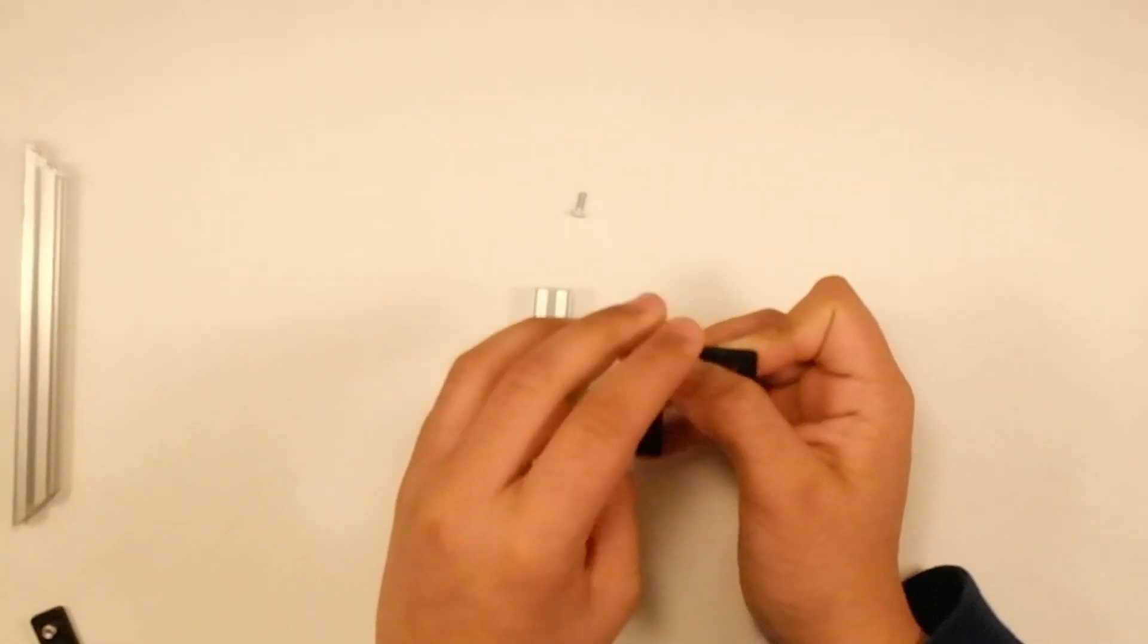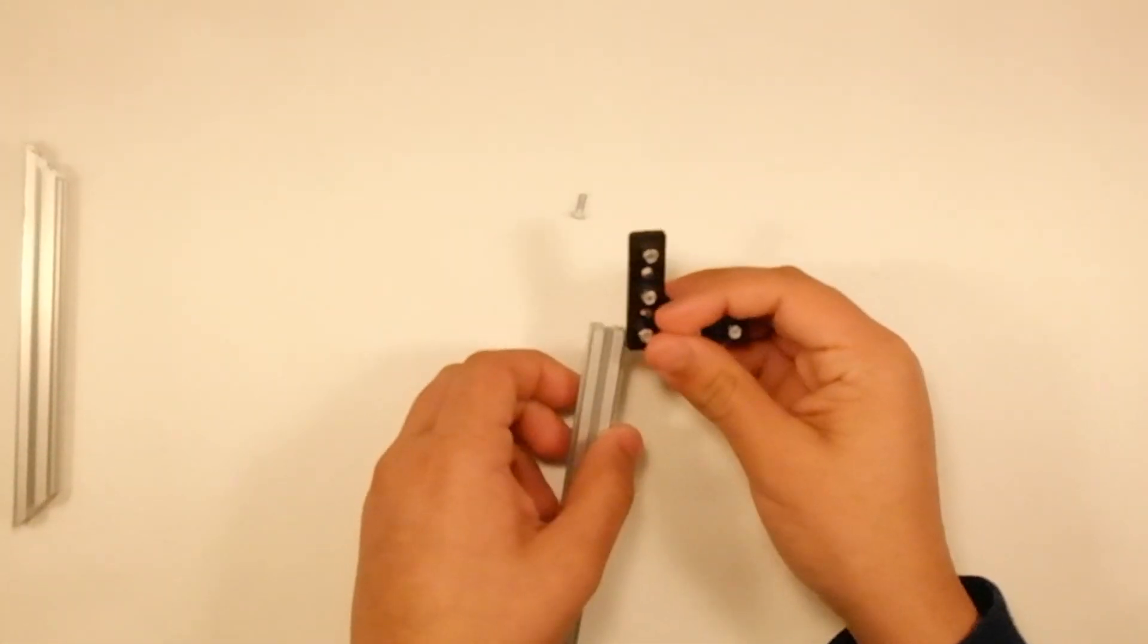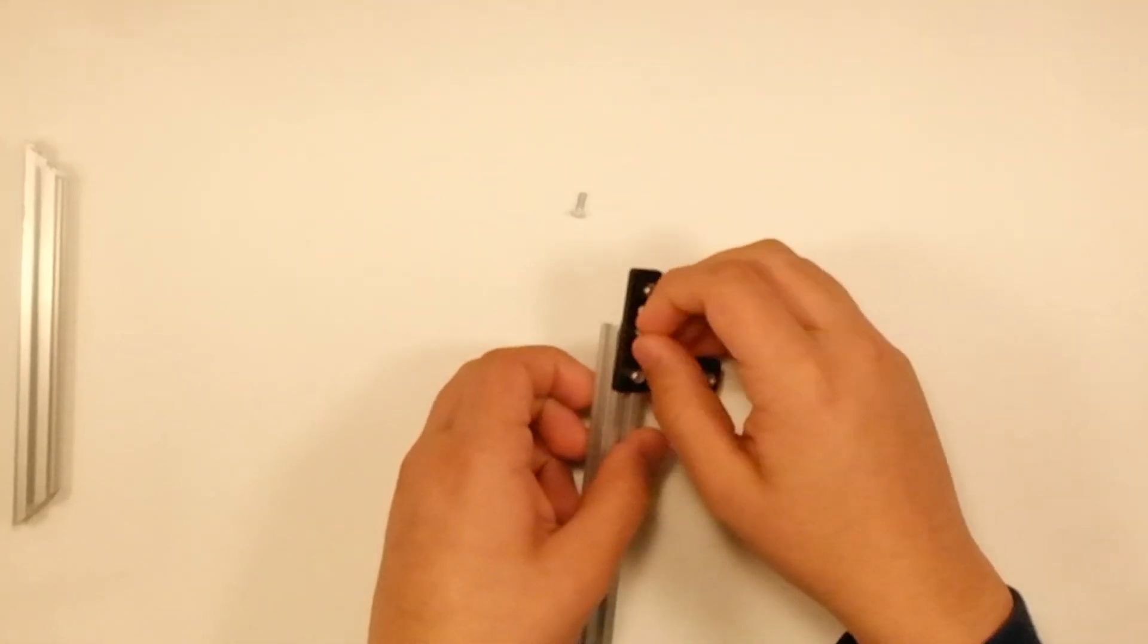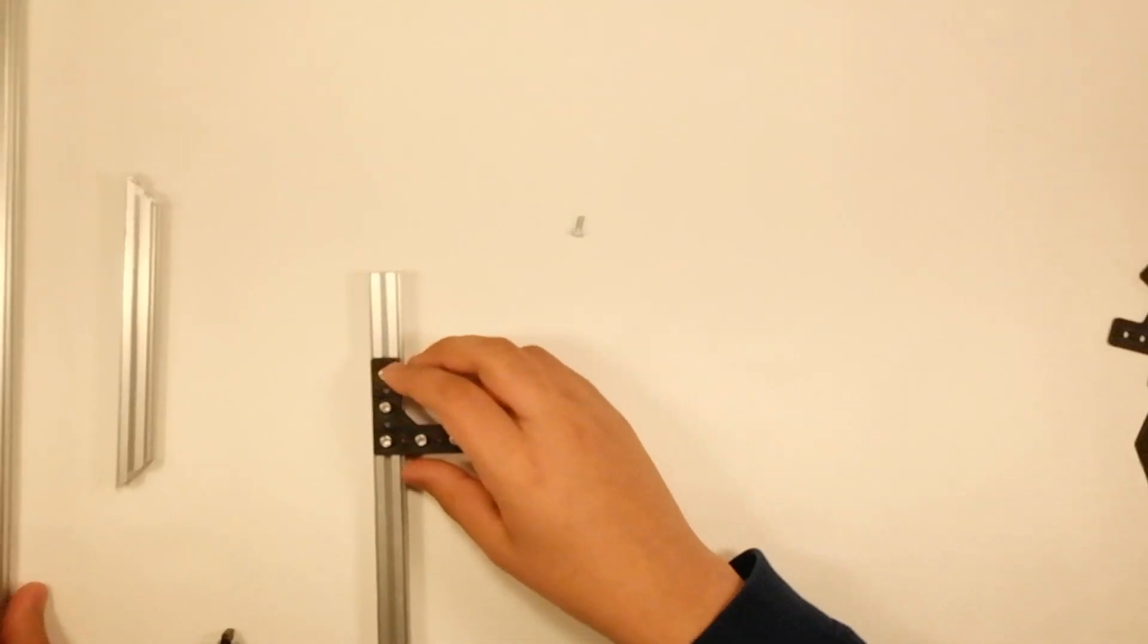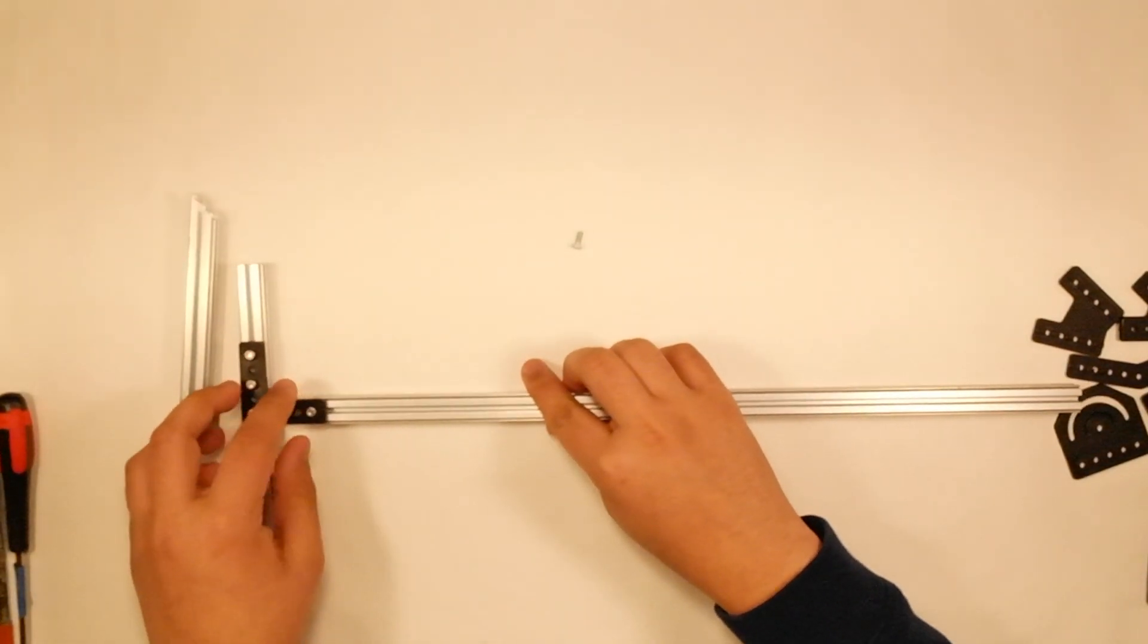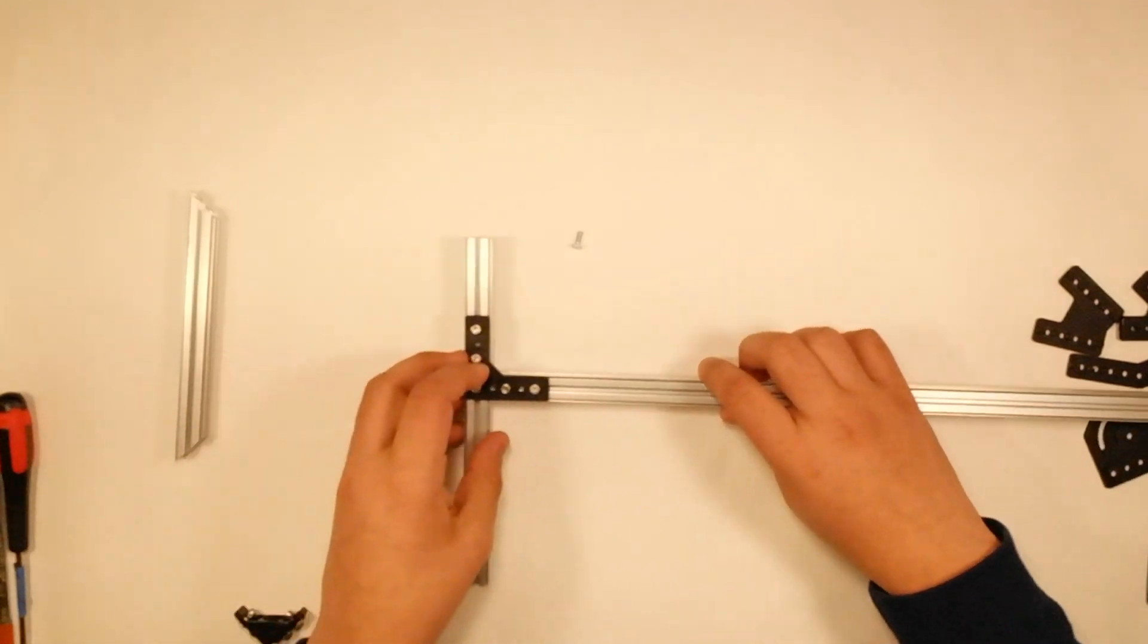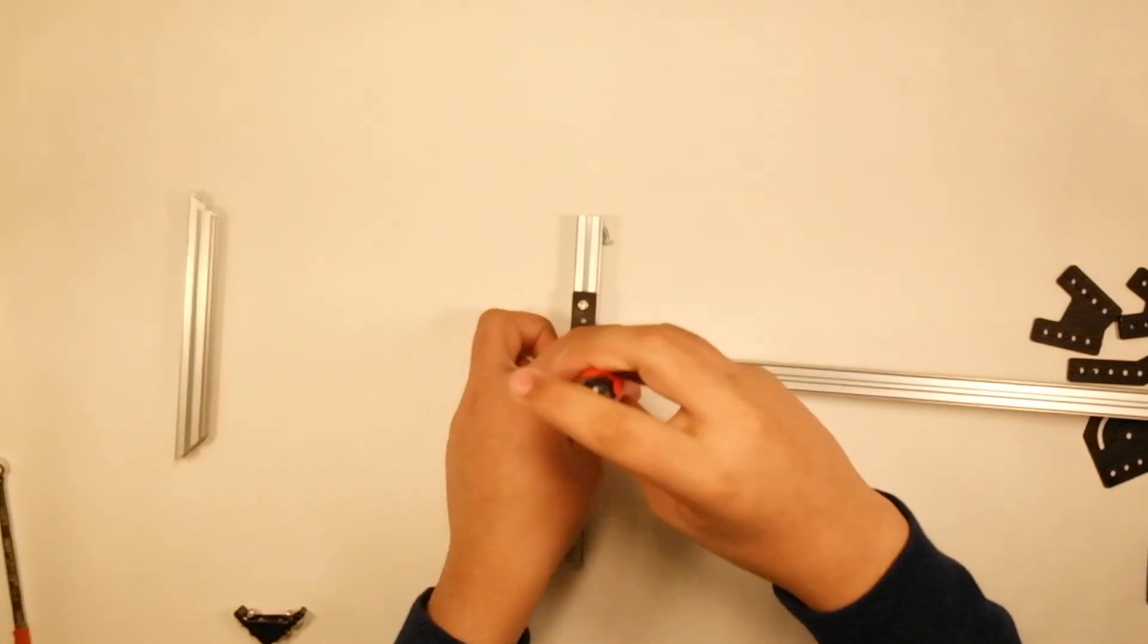And I've already done that for one of these 90 degree brackets right here. In order to put these two pieces together, I can actually just slide the screws into the REV extrusion. And then I tighten it by using the 5.5mm nut driver and turning it clockwise. In order to loosen it, I would turn it counter-clockwise.